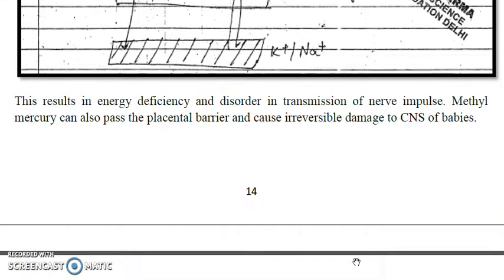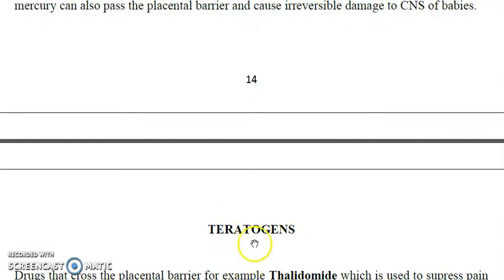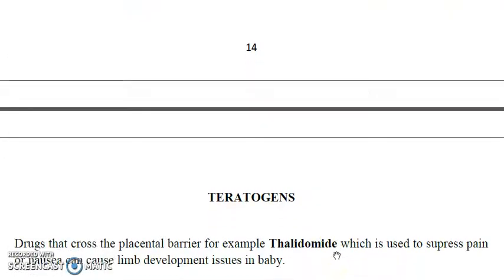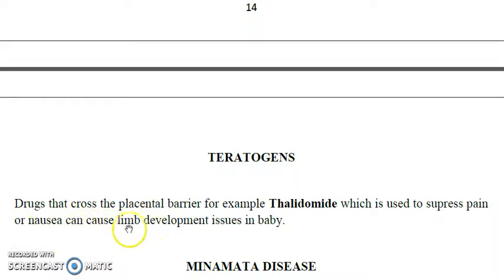Now coming to a very important concept called teratogens. Teratogens are drugs that cross the placental barrier. For example, thalidomide was a drug used earlier to suppress pain and nausea, but researchers later identified that it caused underdevelopment and problems in limb development in the fetus.